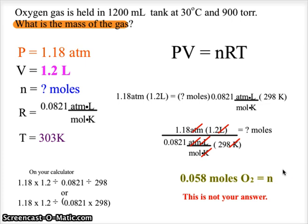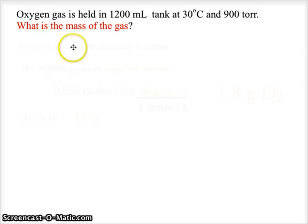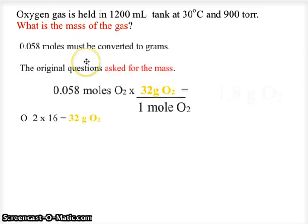We have 0.058 moles of oxygen as our answer, but that is not our final answer because that's in moles. And the question asks us to find the mass of the gas, so we now must go to converting the moles to mass.